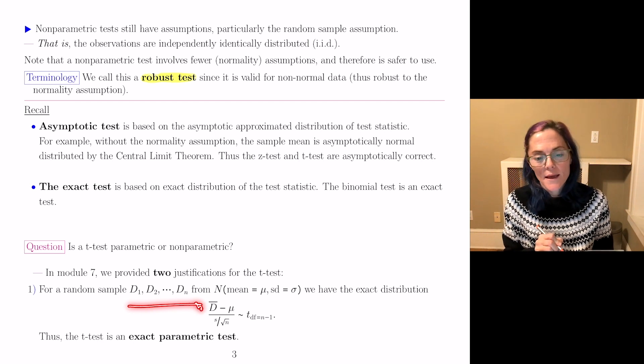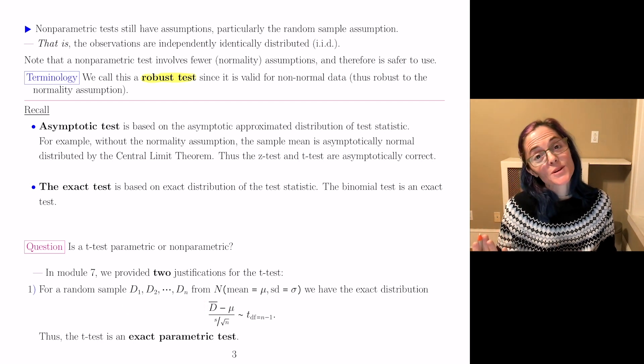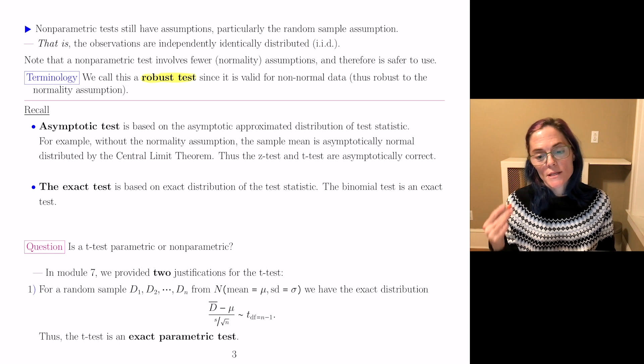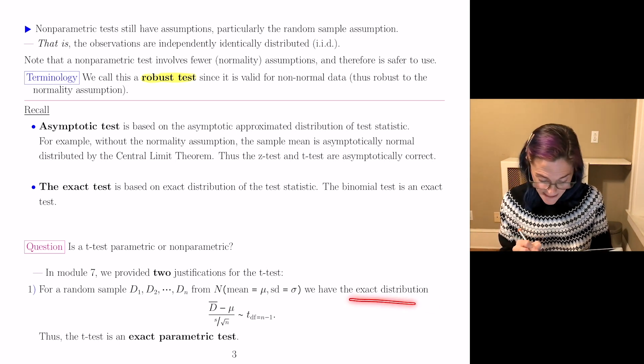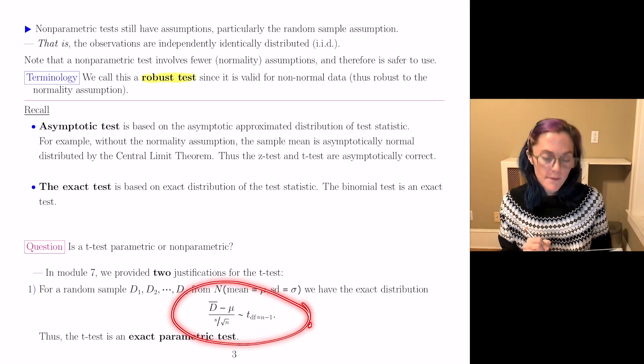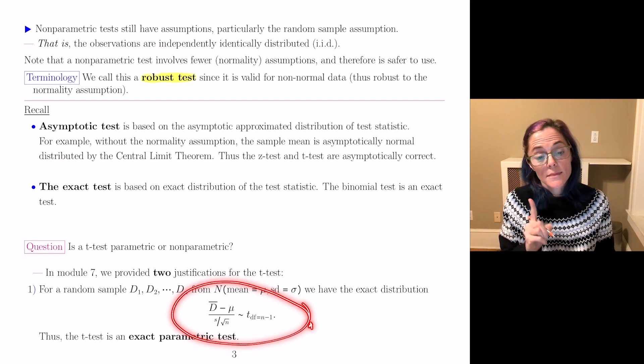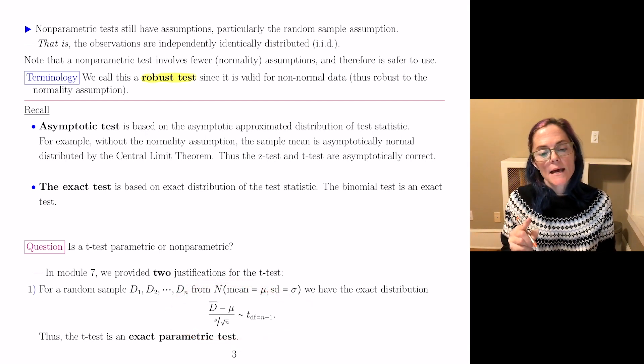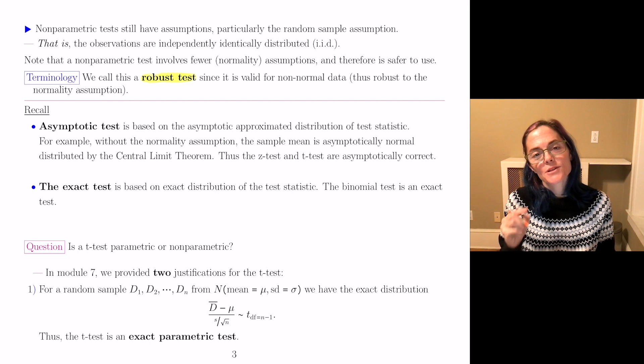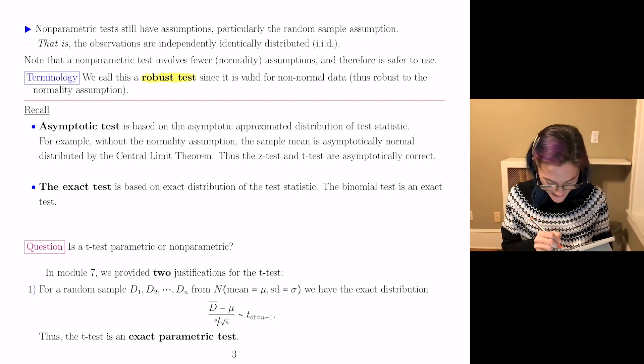We have D₁ through Dₙ from some normal distribution, mean μ, standard deviation σ. And then we have this exact distribution here. Therefore, the t-test is an exact parametric test.